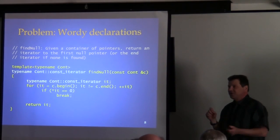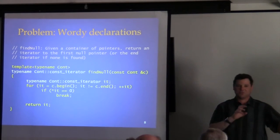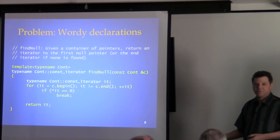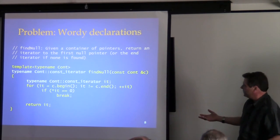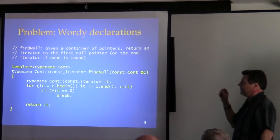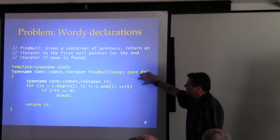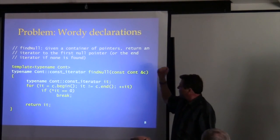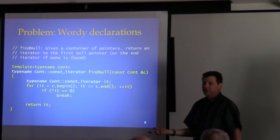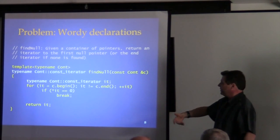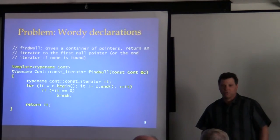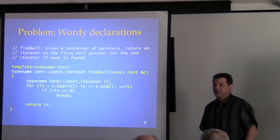The approach I try to use is to show C++98 old code, point out what's wrong with it, and then show how C++11 and 14 improve upon it. We'll start with an old C++ function template that takes a reference to a container and searches it for the first null pointer, returning an iterator to it in STL fashion — or the end iterator.